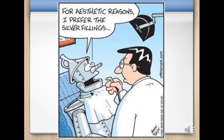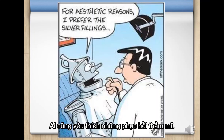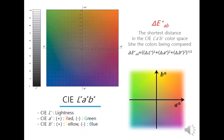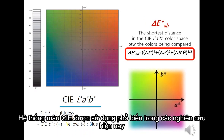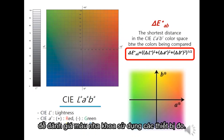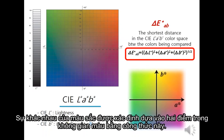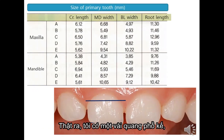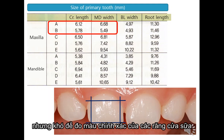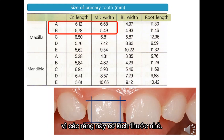Everyone loves aesthetic restorations. The CIE color system is commonly used in perceptual studies for dental color assessment using measurement devices. Color differences are determined between two points in color space by this equation. I have several spectrophotometers, but it was difficult to measure the color of a primary incisor accurately because of their small size.